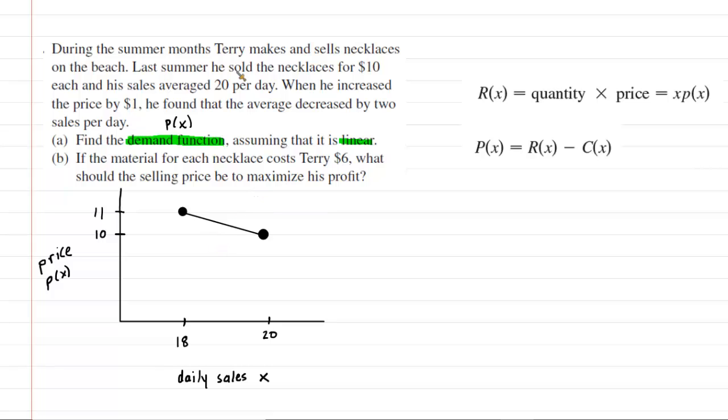Let's see how we did that. The question notes that last summer he sold necklaces for $10 and at that price he was getting 20 sales per day. So what we've done is we've plotted the sales on the x-axis and then the price on the y-axis. And we can see indeed at this point right here when there were 20 sales, then he was selling them at a price of $10.